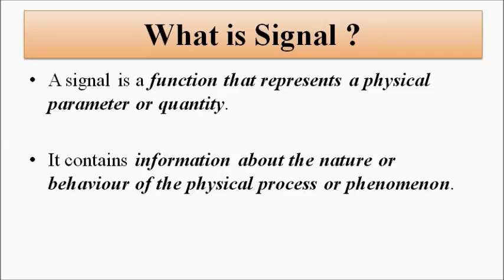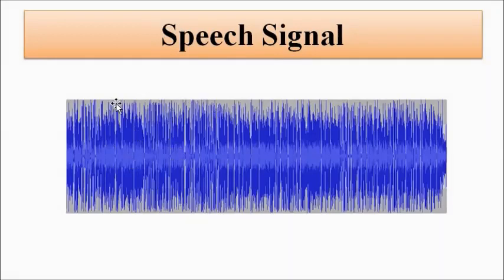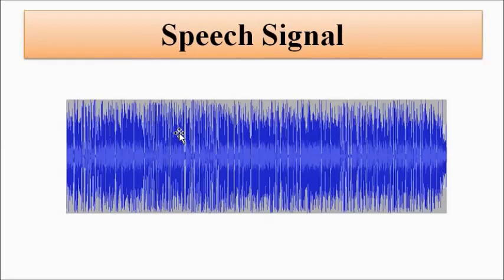For example, right now I am speaking — my voice is also a signal, called a speech signal. This is the general waveform of a speech signal. If we expand it in the time domain, we can see the detailed view of all the spikes in the waveform. In the biomedical instrumentation playlist we discussed various biological and physiological signals such as ECG (electrocardiogram), EEG (electroencephalogram), and EMG (electromyogram), which give information about the functioning of the heart, brain, and skeletal muscles.